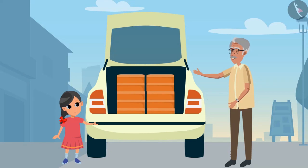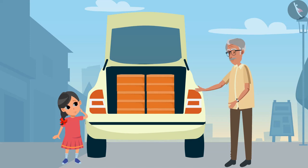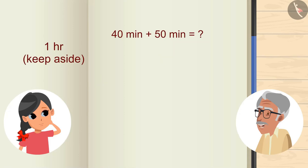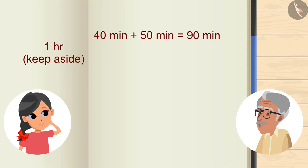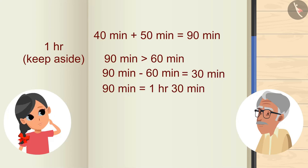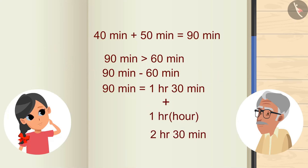Very good. Now a difficult question — can you add 50 minutes to the previous 1 hour 40 minutes? How can I add this, Grandpa? Let me show you. Units of 40 and 50 are both in minutes, so we can add both together. 50 plus 40 is 90 minutes. But is 90 minutes greater than 60 minutes? Yes. So on subtracting 60 from 90 minutes, we get 30. So 1 hour, 30 minutes. Right, Grandpa? Very good. Now add this 1 hour 30 minutes to the previous 1 hour. So we get 2 hours 30 minutes.